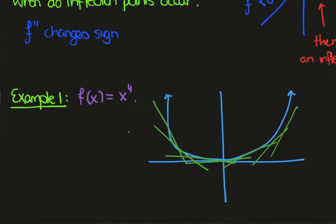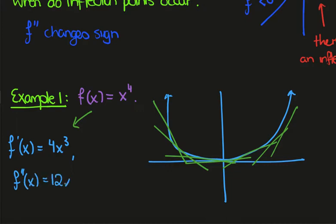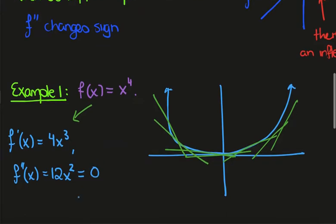We'll calculate the derivatives of this function. The first derivative is 4x³ and the second derivative is 12x². If inflection points occur when the second derivative equals 0, then this equation tells us an inflection point occurs at x equals 0. But that's obviously false because there's no change of side of the tangent line, so this condition is false.